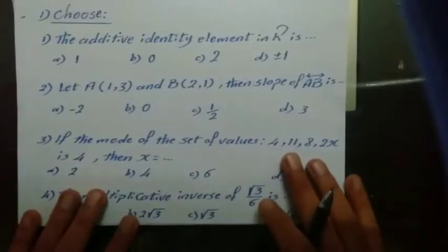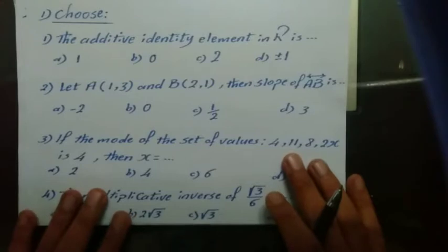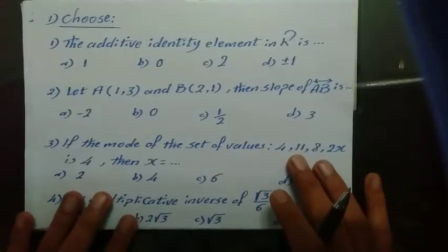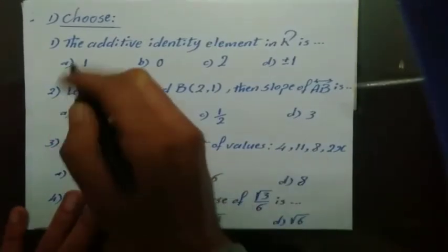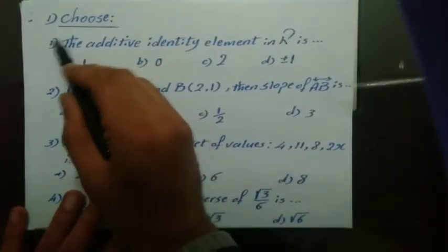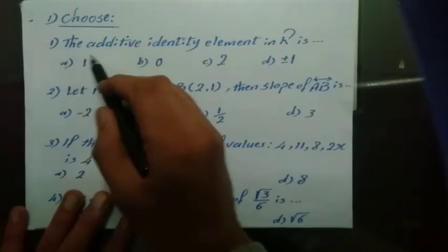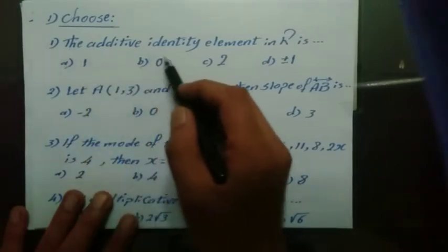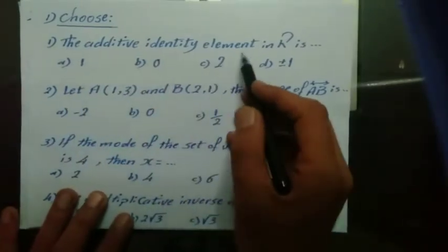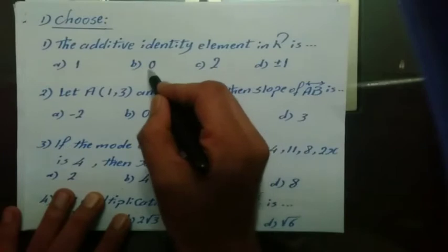Welcome everybody. Today we revise algebra middle 2. The first equation: choose the additive identity element in R, which is 0.